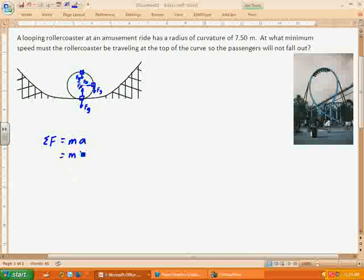We've got the sum of the forces, and if we're assuming that that normal force is zero or very close to zero, then the only force we have here that is causing the centripetal force is the force of gravity, which is going to be mg.